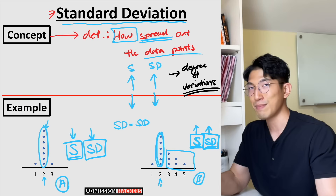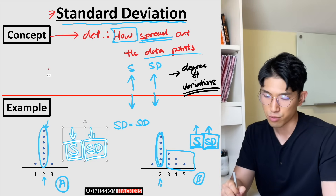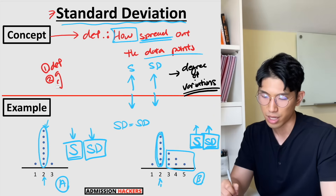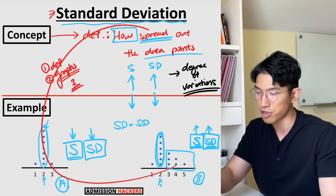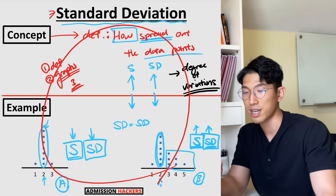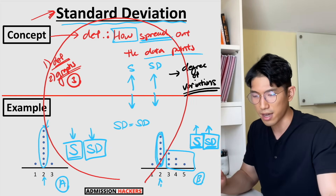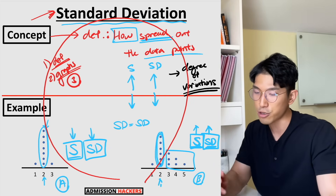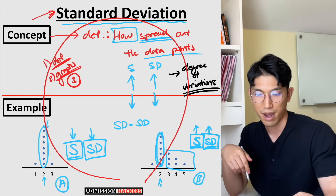Specifically for the SAT, you want to know two things about standard deviation. First is the definition, which is what we just went over. Second, you want to understand how graphs work — there are three main types. Before we go into the graphs, make sure you've understood the definition, because if you don't, the graphs are not going to make sense. Give yourself a second, maybe watch a couple more times, but get the definitions down before you move on.